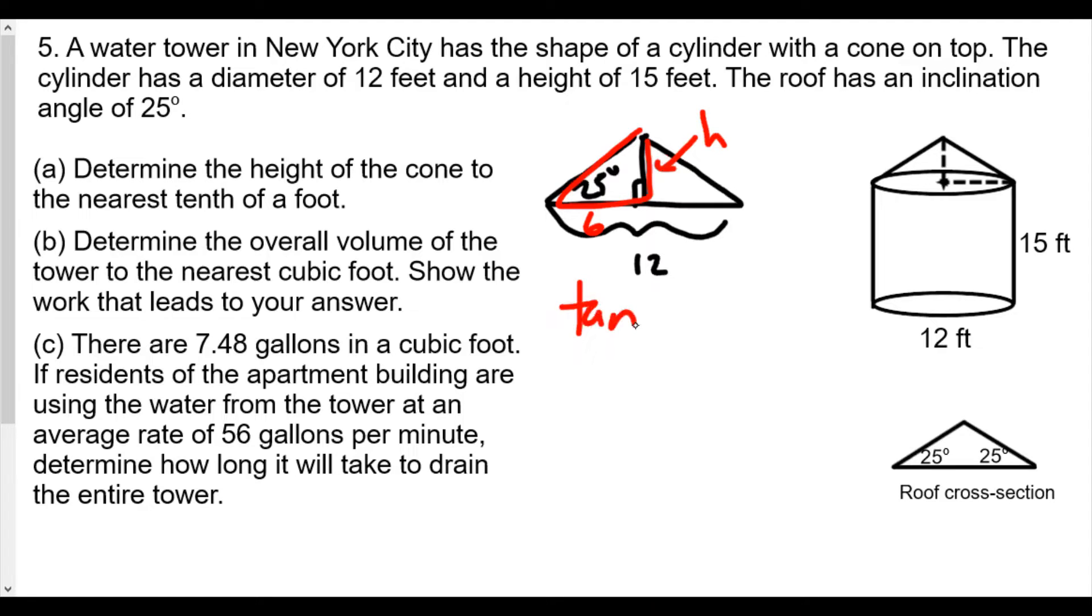We know the tangent of 25 degrees is equal to h over 6. If we want to solve for the height, we're going to multiply both sides by 6, and we get h equals 6 times tangent of 25 degrees.